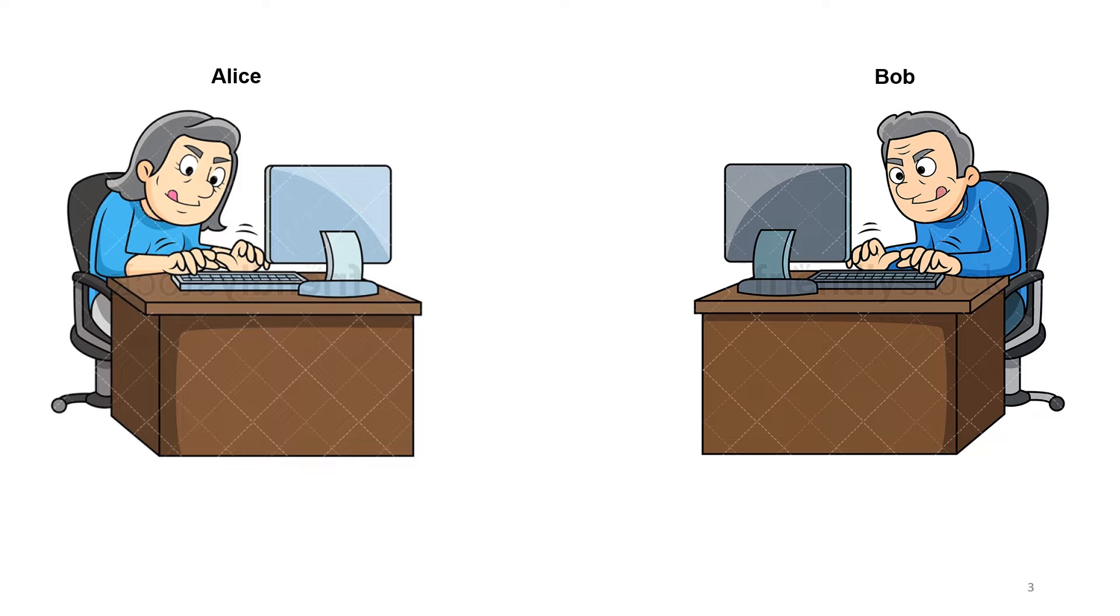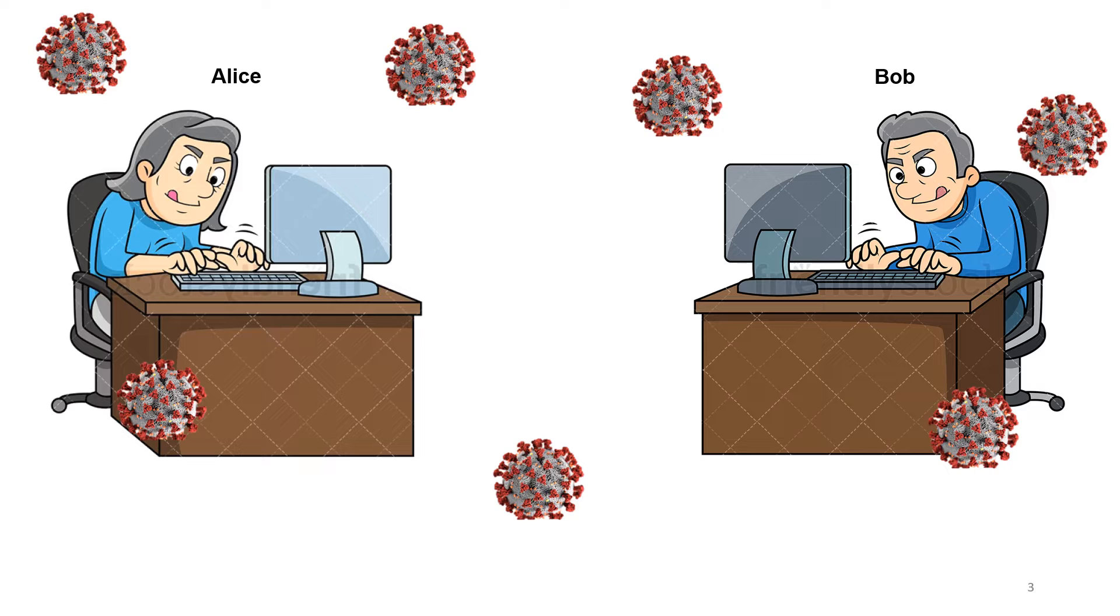On top of that, the COVID-19 pandemic sped up the need for remote services. Here, Bob the banker is reaching Alice. Alice is interested in transferring money to her daughter's account. To do so, Bob requires the good old-fashioned password.